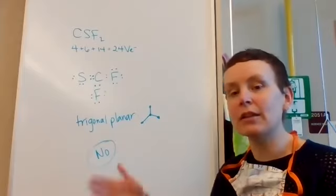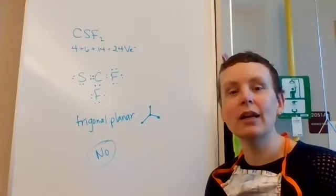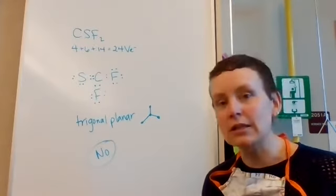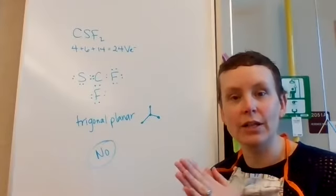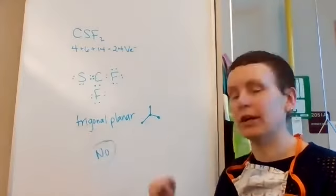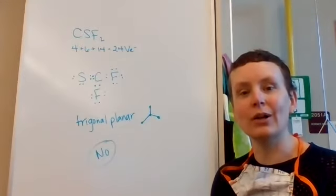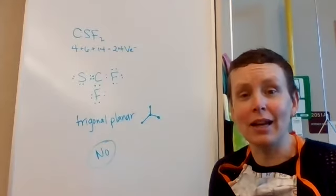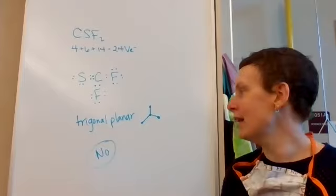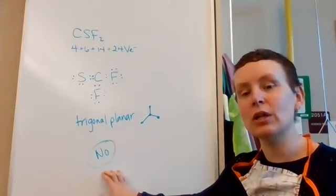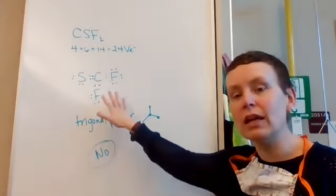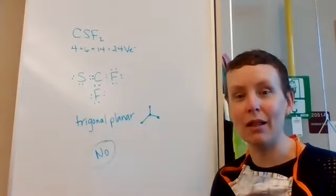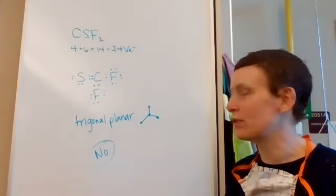All right, shape-wise, carbon has three things attached to it, no lone pairs. So the farthest apart three things can get is 120 degrees, which is a flat triangle, trigonal planar. So flat triangle is the shape, but obviously we have to give it a more complicated name in chemistry, right? So trigonal planar. And then no symmetry because trigonal planar is symmetrical, but only if all of the outer atoms are the same element. So no symmetry for this molecule.